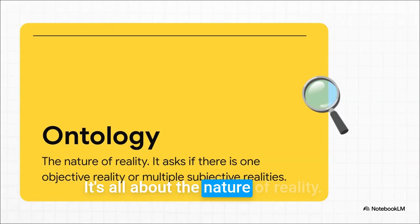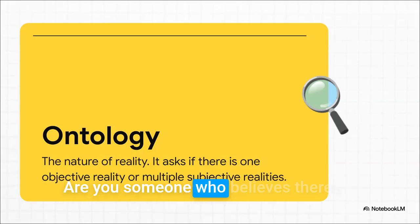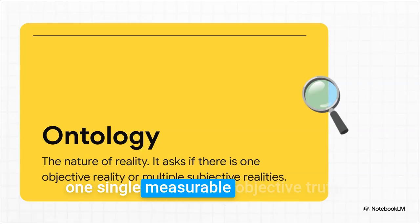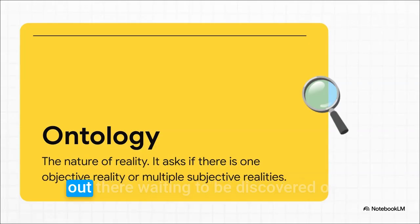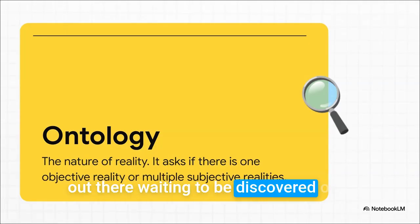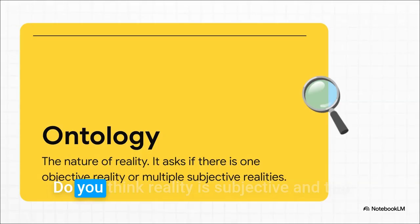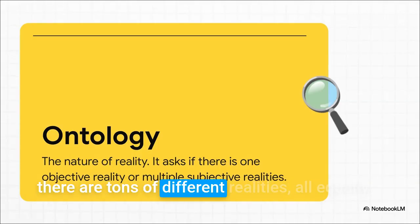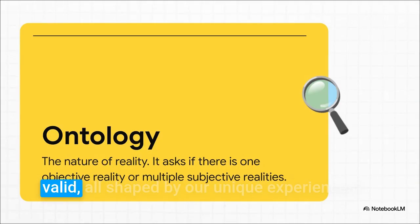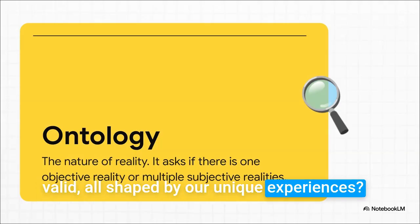It sounds like something you'd ask in a late-night dorm room chat, but a researcher's answer to this is literally the bedrock of their entire project. The fancy term for this question is ontology — it's all about the nature of reality. Are you someone who believes there's one single, measurable, objective truth out there waiting to be discovered? Or do you think reality is subjective and that there are tons of different realities, all equally valid, all shaped by our unique experiences?